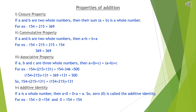Fourth, additive identity. If a is a whole number, then a plus 0 is equal to 0 plus a, which equals a. So 0 is called the additive identity because after addition, it does not affect the whole number. For example, 154 plus 0 equals 154, and 0 plus 154 equals 154.